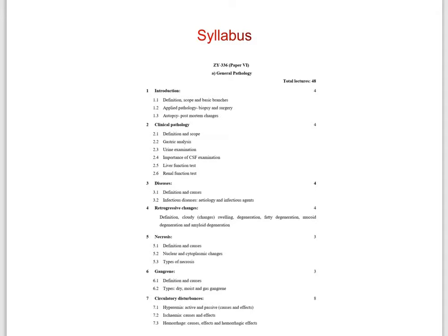The fifth chapter is necrosis, with subpoints such as definition and causes of necrosis, nuclear and cytoplasmic changes, and types of necrosis. After that, the sixth chapter is gangrene. In that, the seventh chapter is circulatory disturbances.